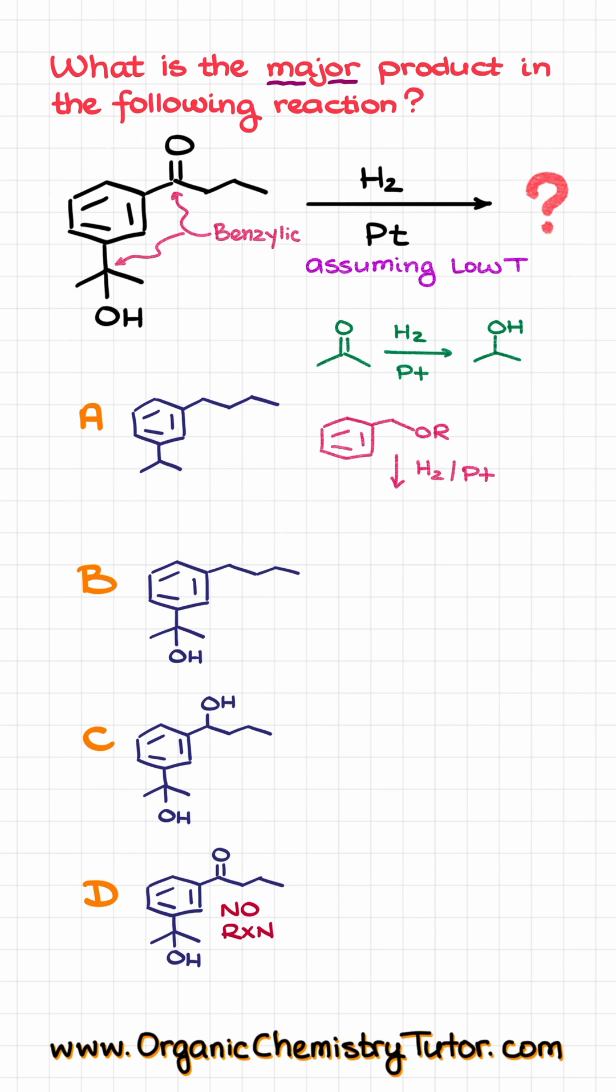and we try to do the hydrogenation with a heterogeneous catalyst like platinum or palladium, we are going to break that bond as well, and end up with the corresponding aromatic compound and an alcohol.